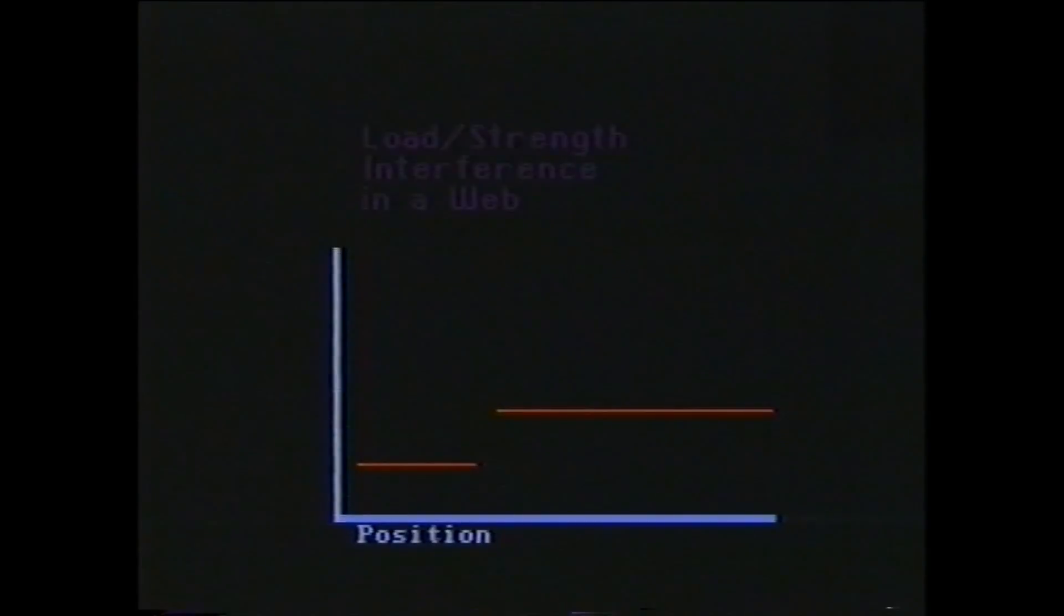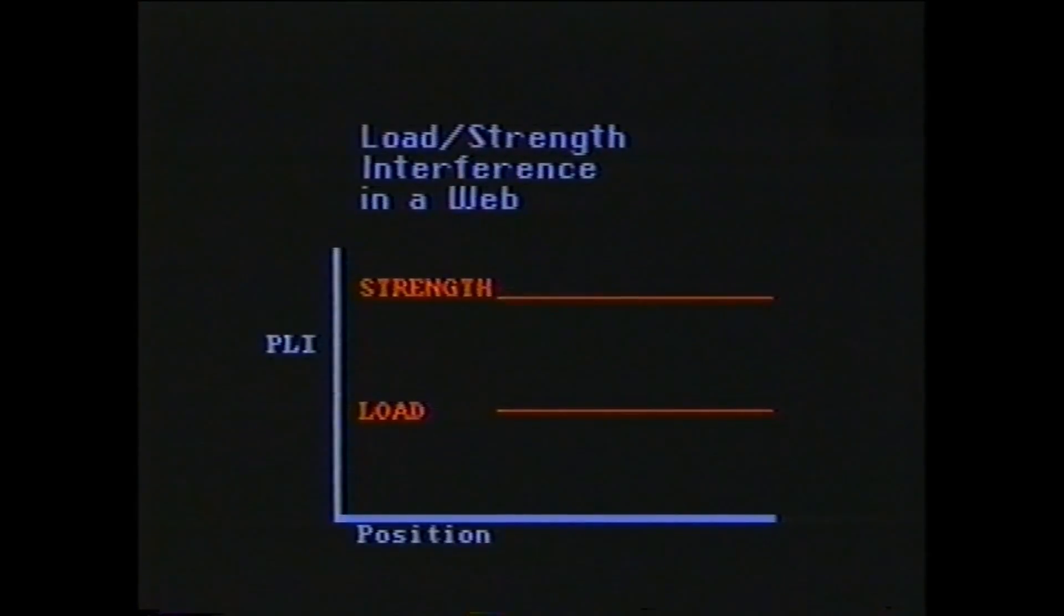The average web stress is determined by web tension set point. The average web strength is determined by the paper making process. However, web stress and web strength are not constant with time. Stress varies due to out of round unwinds and strength varies due to paper making process fluctuations.